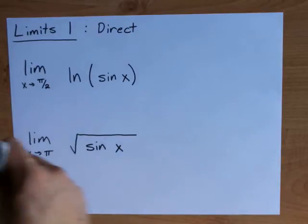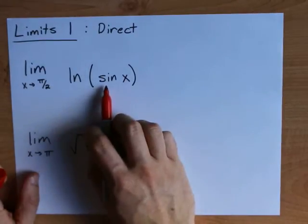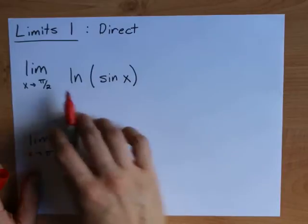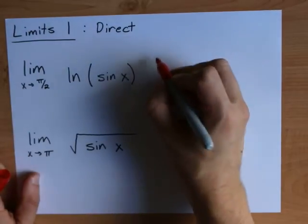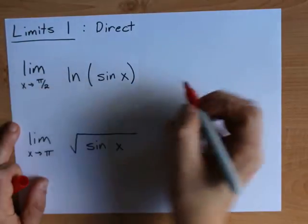In fact, the sine of pi over 2 is a number. So I think we should figure out what sine x becomes as x approaches pi over 2.